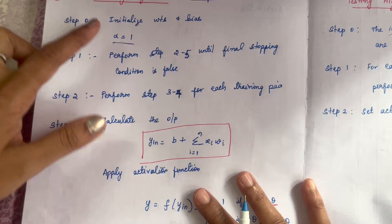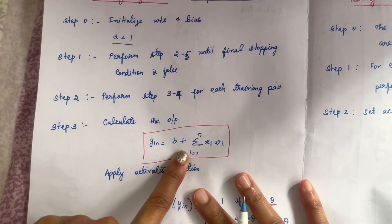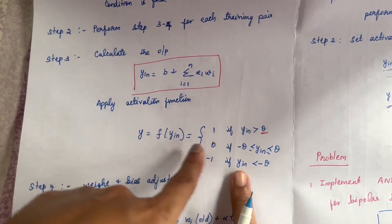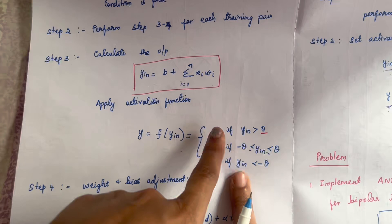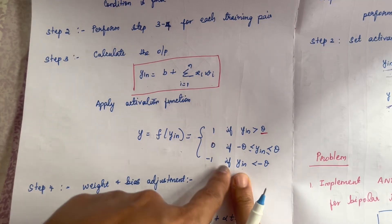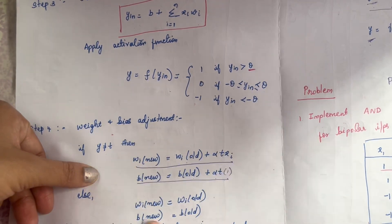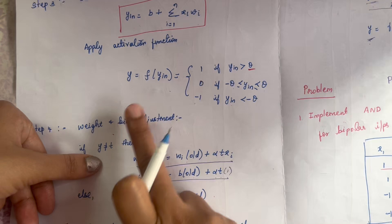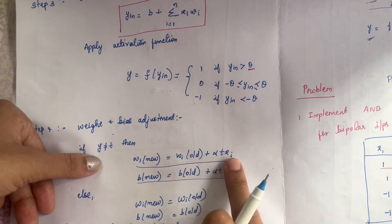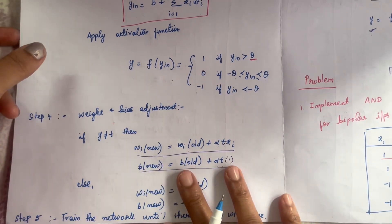For the Perceptron Network, first we need to initialize the weights and bias, and then find out the net input y_in using the formula: b plus sigma (i=1 to n) x_i into w_i. Then we apply the activation function: if y_in is greater than theta it is 1, if it is between minus theta and plus theta it is 0, and if it is less than minus theta it is minus 1. After applying the activation function, we update weights and bias. If y is not equal to the target value, then we update: w_new = w_old + alpha * t * x_i. Otherwise we keep the old weights. This is the algorithm for the Perceptron Network.